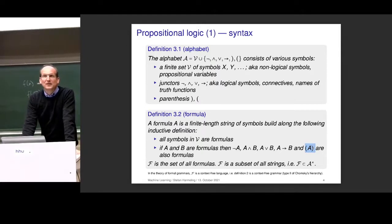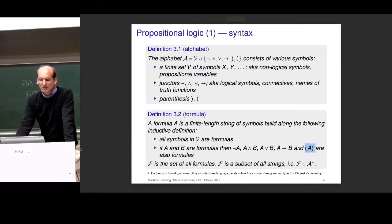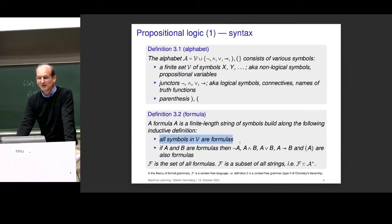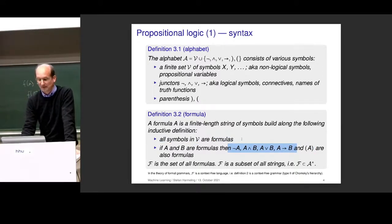This is the syntax part — it allows us to write a parser. Next, let's go to the semantics part. The overall idea is we want to assign a truth value to all formulas. We do it along the inductive definitions: we start with all symbols and give them a truth value, then explain for more complicated formulas what their truth value is, dependent on the truth values of A and B.